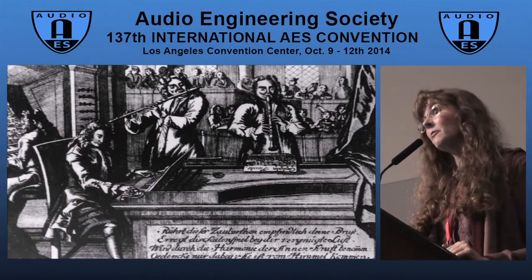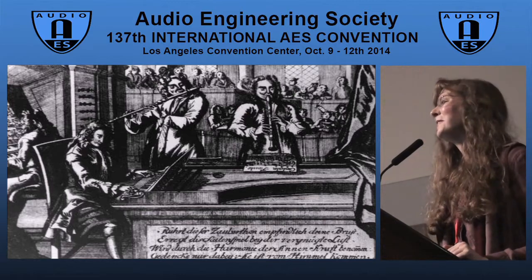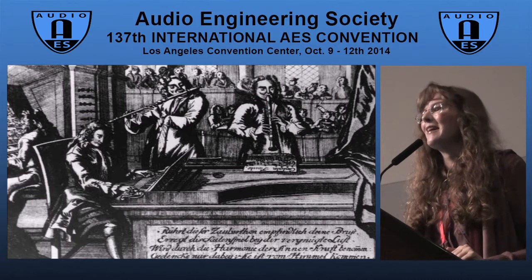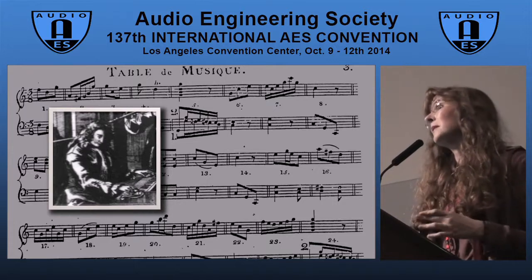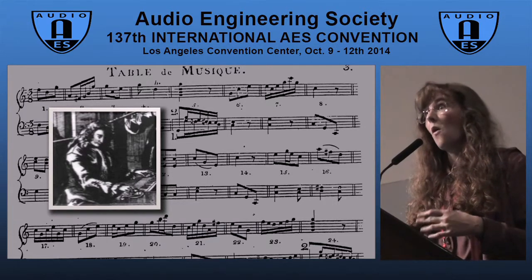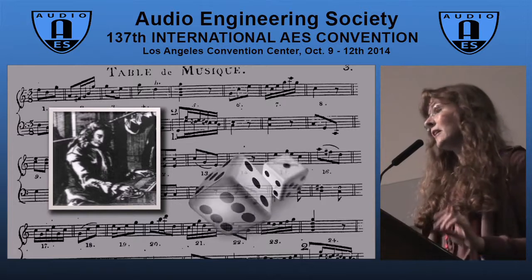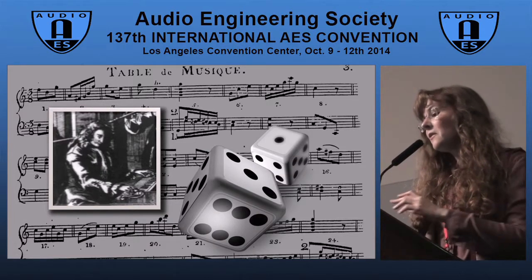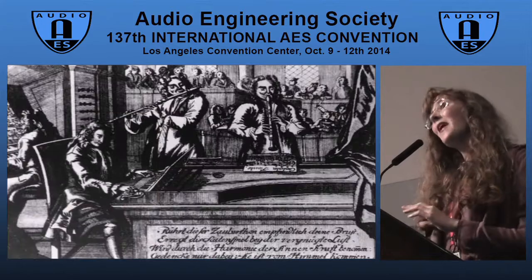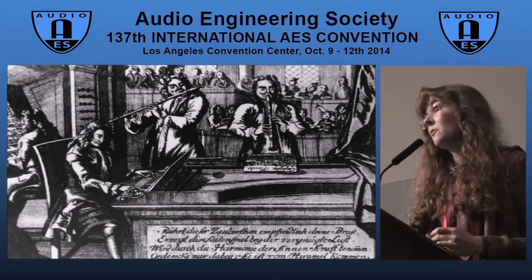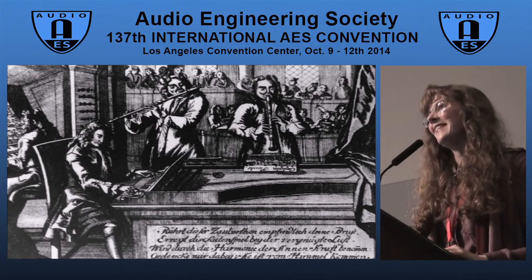Mozart and Haydn may have been the first composers to create interactive pieces of music. They did this with a very clever game consisting of a large assortment of individual measures of music, all numbered. Players rolled dice and depending upon the numbers they rolled, the music was put into a particular order. The final result was a piece of finished music that seemed completely original to whoever had rolled the dice.